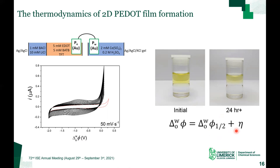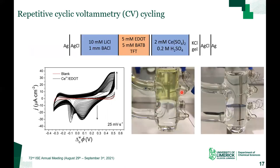Indeed, to show this — if you take an aqueous solution of 2 millimolar cerium(IV) in 0.2 molar sulfuric acid and contact it with an organic phase of EDOT in trifluorotoluene, no PEDOT thin film forms after 24 hours. Therefore, to initiate 2D PEDOT film formation, the liquid-liquid interface must be polarized using a potentiostat in conjunction with a four-electrode electrochemical cell. Here we have the evolution of EDOT or PEDOT polymerization at the electrified liquid-liquid interface over 50 CV cycles. To our knowledge, this is the first example of CVs representative of interfacial electrosynthesis of conducting polymers being recorded at an electrified liquid-liquid interface. The double layer grows steadily with cycling in a manner similar to electropolymerization at a solid electrode, although the meaning of the various peaks is different.